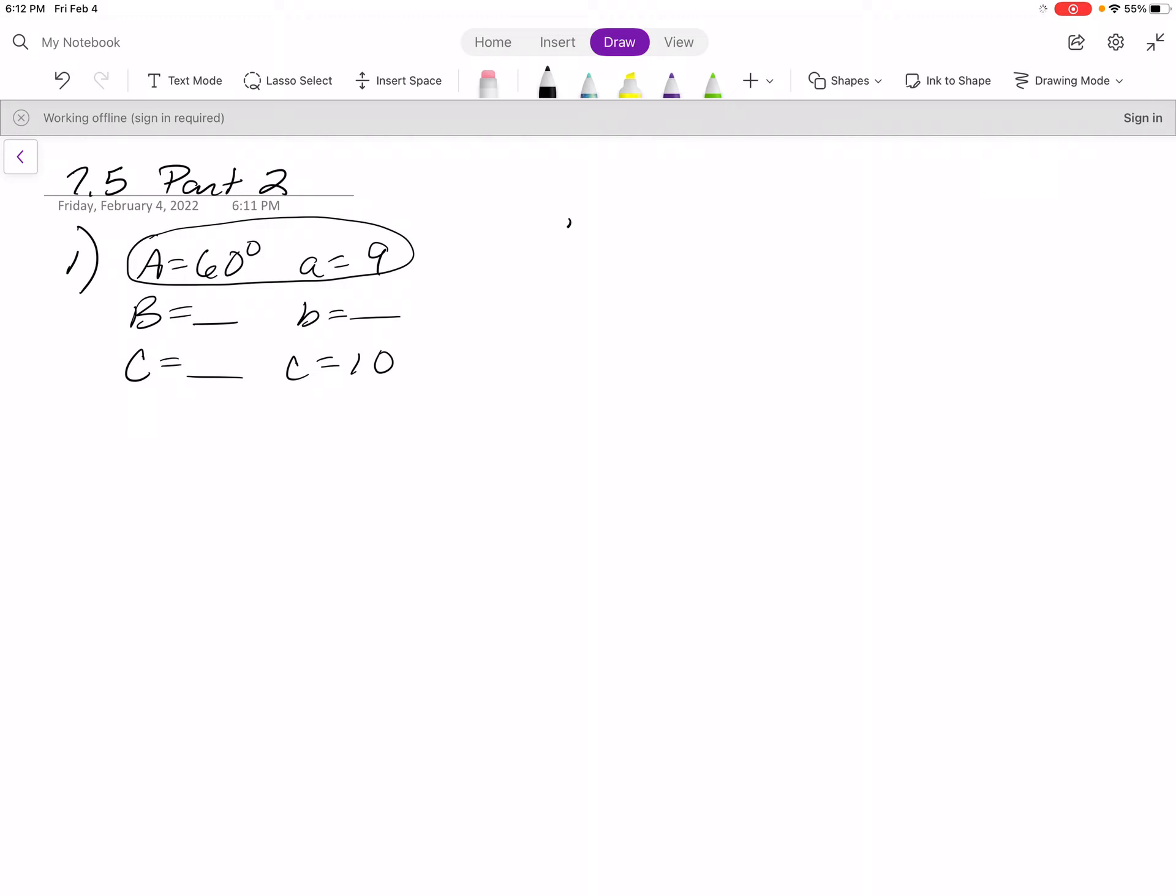So you're going to say 9 over the sine of 60 degrees equals 10 over the sine of angle C, and you're going to cross multiply, and you're going to unsine it, inverse sine, and you're going to find out that C is 74.2 degrees.